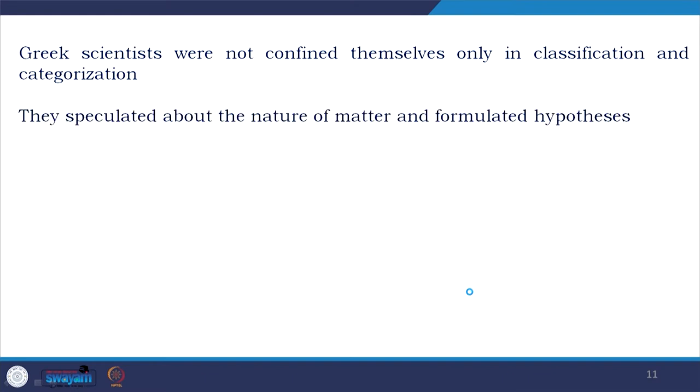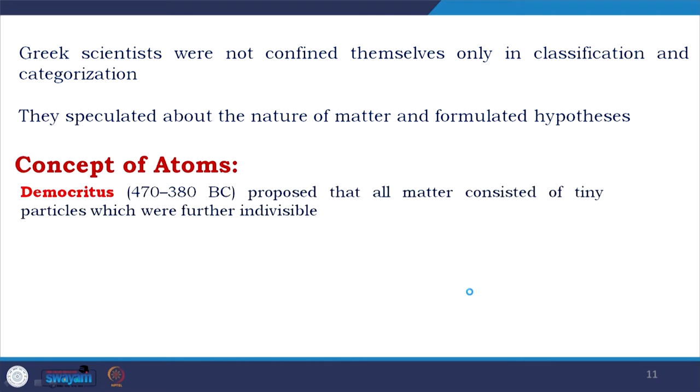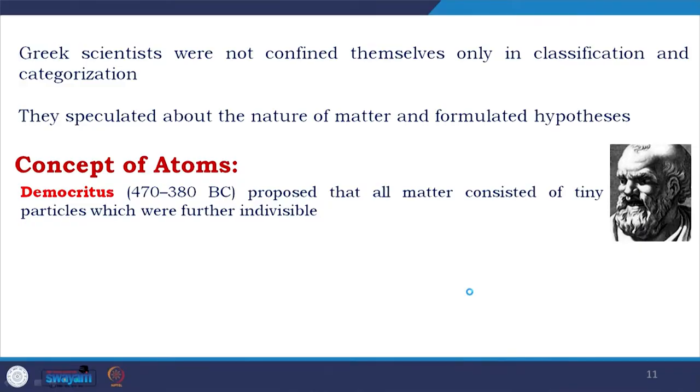Greek scientists were not confined only to the classification and categorization of animals and plants. They speculated about the nature of matter and formulated hypotheses. Democritus, another legendary scientist, proposed that all matter consisted of tiny particles which were further indivisible. With modern eyes, you could understand that he already reached the concept of the atom, though they visualized atoms as solid things — so they reached up to the concept, but not beyond.